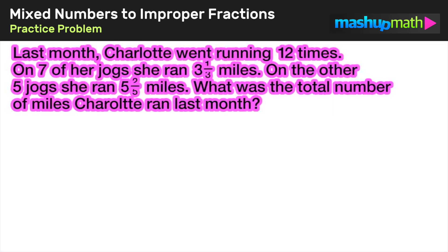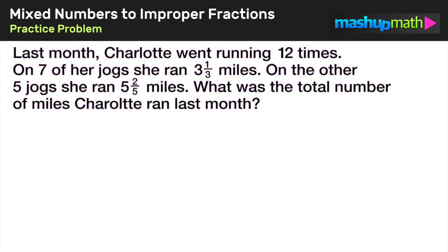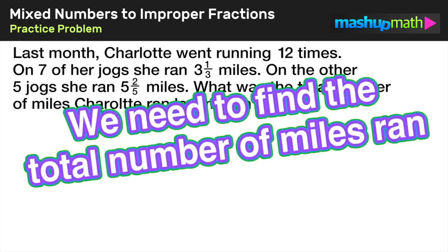Last month Charlotte went running 12 times. On seven of her jogs she ran three and one-third miles, and on the other five jogs she ran five and two-fifths miles. What was the total number of miles Charlotte ran last month? Given this problem, we need to find the total number of miles ran.